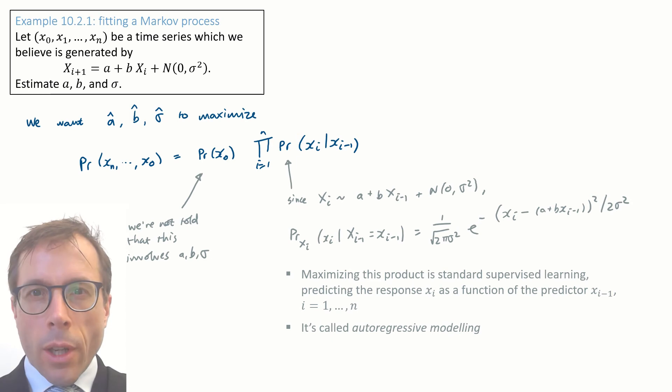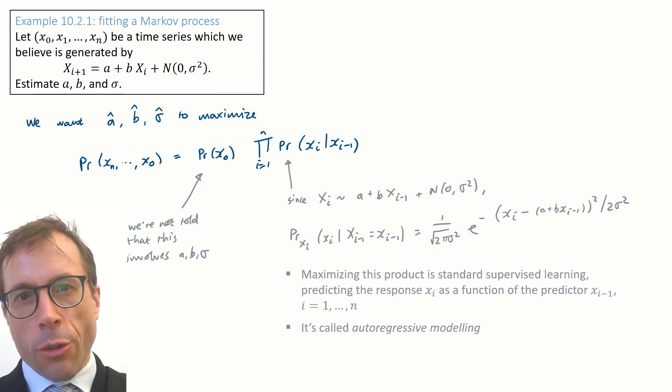The big thing to spot is that the maximisation we want to do here is exactly what we do in the standard supervised learning setup. We're treating xi as the response variable and xi minus 1 as the predictor. For this particular question, the response is a continuous random variable, so this type of fit is called a regression. And so fitting a Markov chain like this is called autoregression, since it's basically a regression of the time series x against itself.